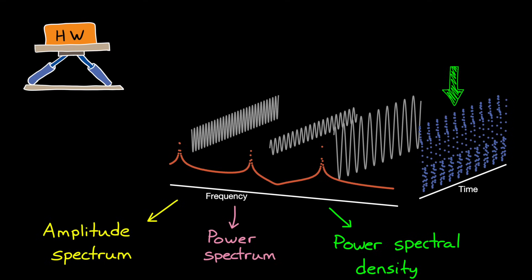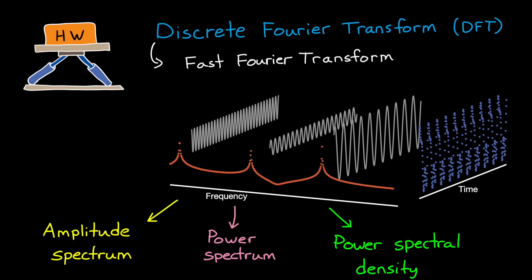Now with finite discrete data like we have here, the first step to getting to any one of these representations is the discrete Fourier transform, or DFT. And the most efficient way to compute the DFT is using a fast Fourier transform algorithm, or FFT.